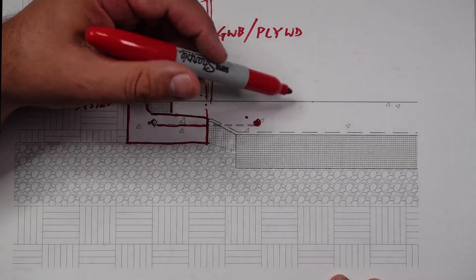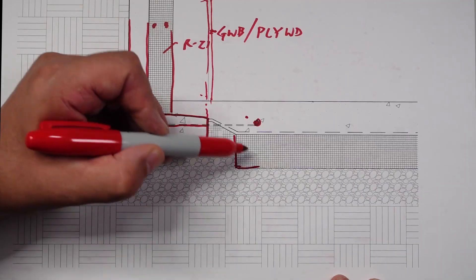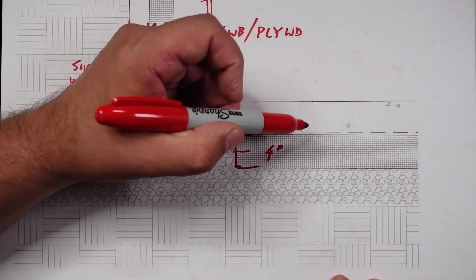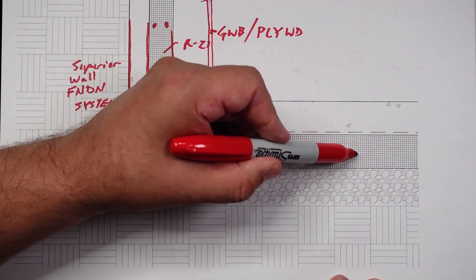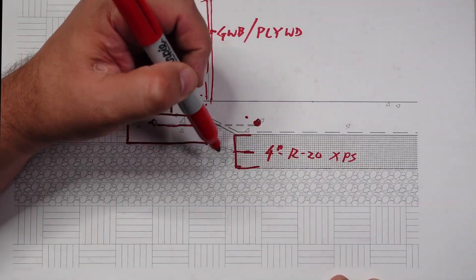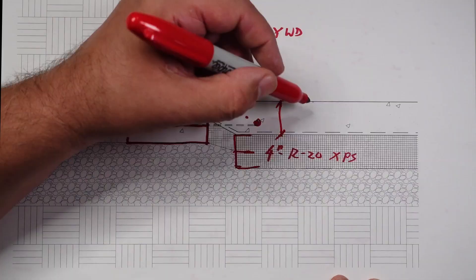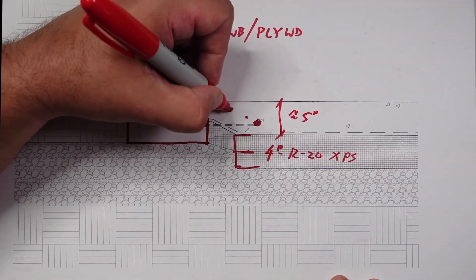But that helps tie the slab that you're pouring to the wall system there. And you can see what we did here: we have our rigid insulation and this is four inches of R20. You used XPS there and put that underneath the slab.